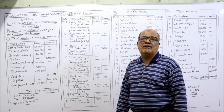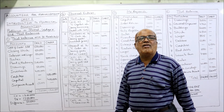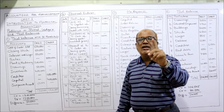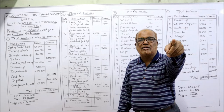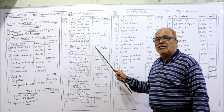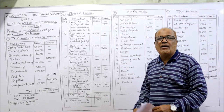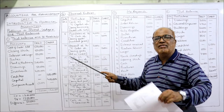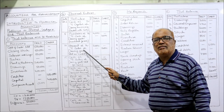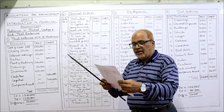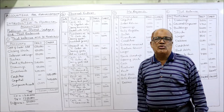Tenth: sold goods to Hemant — it's a credit sale because a name is given. Hemant is the receiver, so Hemant should be debited. Rule: debit the receiver, credit the giver. When we sell goods, sales should be credited. Entry: Hemant account Dr. to Sales 2,000. Narration: being goods sold on credit.